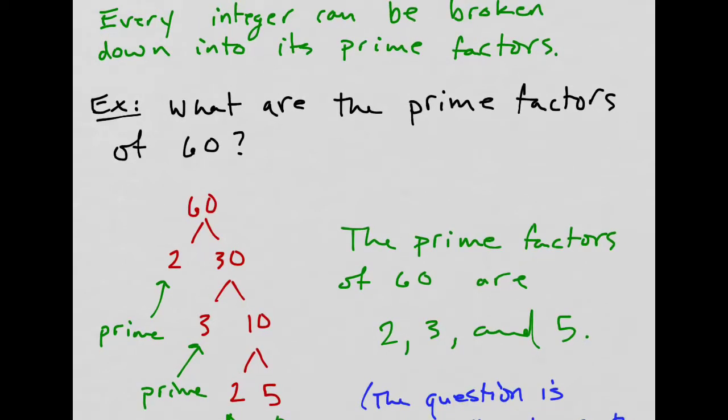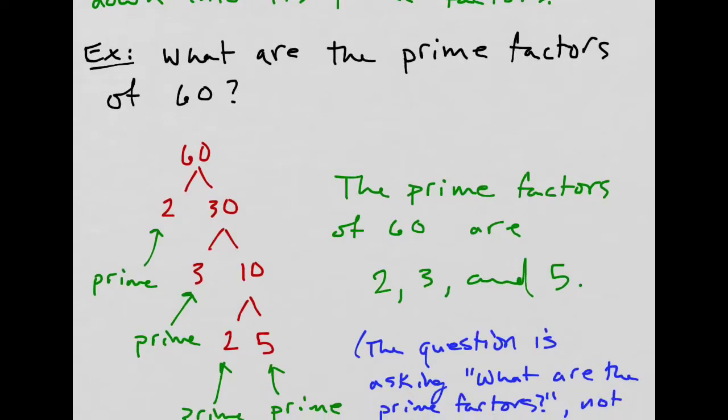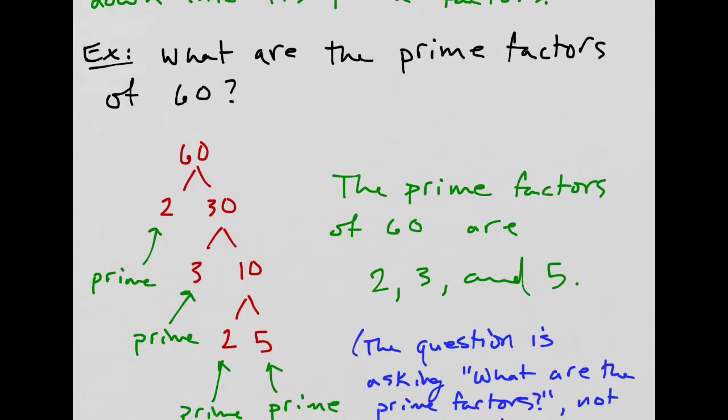So it's saying what are the prime factors? 2, 3, and 5. I don't say 2, 2, 3, and 5 because it's asking for what they are, not how many are there of each.